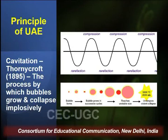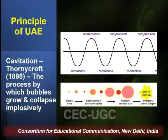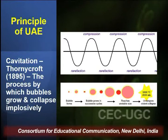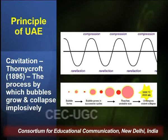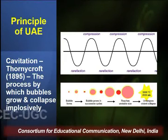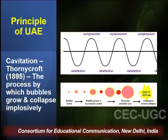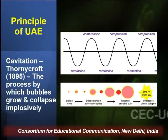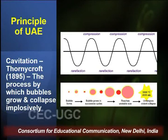This process of formation of bubbles through compression and rarefaction phases is known as cavitation, first reported in 1895 by Thornycroft. With each cycle the bubbles increase in size and reach a threshold value where they explode or burst. It has been found that as soon as they burst there is a substantial increase in localized temperature — ranging from 2000 to 5000 degrees Celsius — and localized pressure ranging from 2000 to 3000 atmospheres. The threshold at which bubbles explode is known as the cavitation threshold.